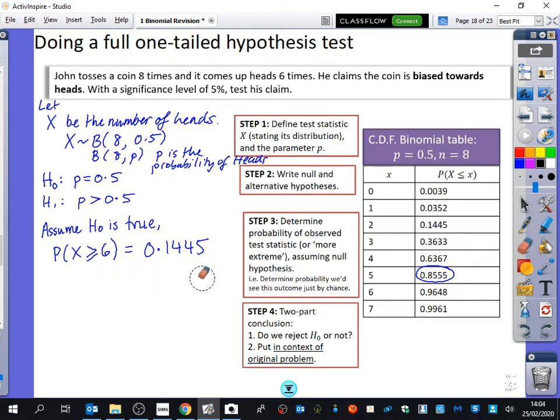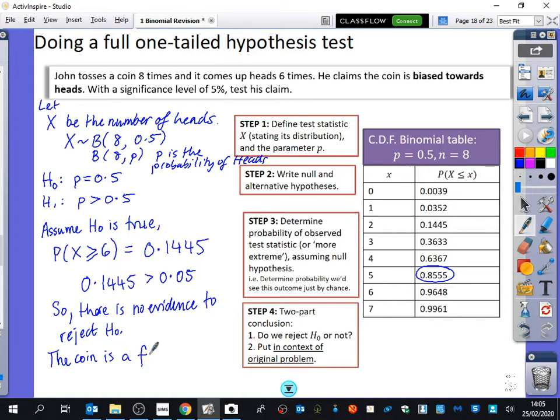Then, all we can say is, well, this probability is bigger than 0.05, which is our significance level. So there is not enough, there is no evidence to reject the null hypothesis. That's what one of the marks is for. There is a second mark, which is to put it in context of the original problem. If you do this whole question and you don't bother putting it in the context of the question, you're just throwing away a free mark. So there is no evidence to reject H0. The coin is a fair coin. That's what it suggests.